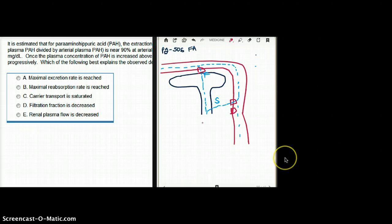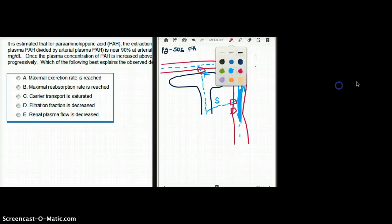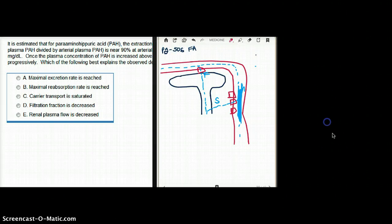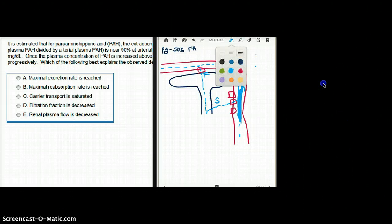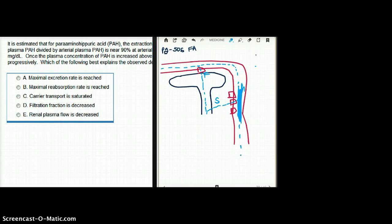So if you have so much PAH in your system, that these carriers become overwhelmed by the amount of PAH, there is not enough manpower to get the PAH out of the system through secretion, only then you will have PAH back in your blood. A little bit PAH is going to go back to your blood.